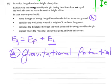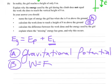Calculate the work done to reach a height of 8 metres above the ground. There's actually two ways we could do this, and they amount to the same thing. Work done is force times distance.